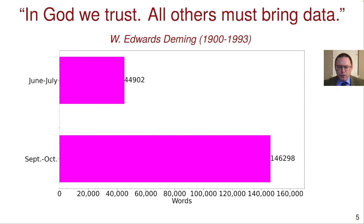I'm not God, so I have to bring data. I have two data points here: the number of words that I wrote in June and July this year, and in September and October. I adopted the use of voice computing in the middle of August. You can see I got a over a three-fold increase in my output.